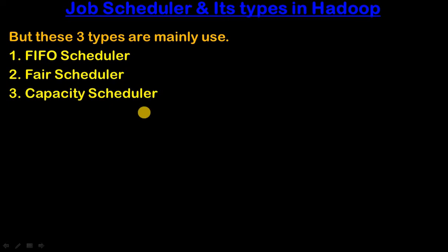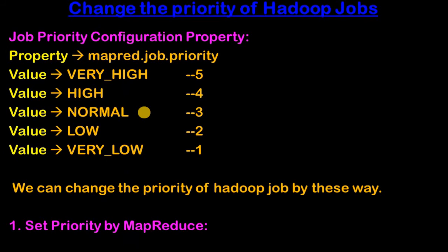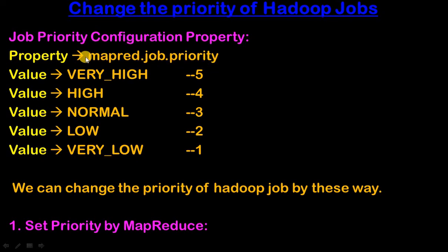Now let's see the next topic: how can we change the priority of a Hadoop job. We can change the priority of a Hadoop job using the property mapred.job.priority. By using this property we can set the priority of a Hadoop job.